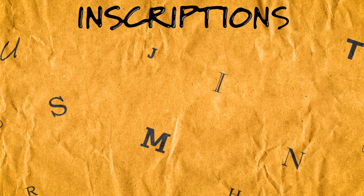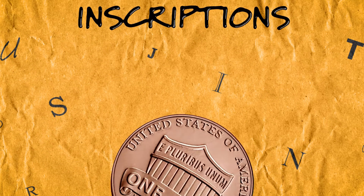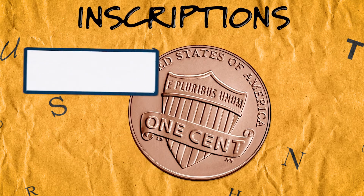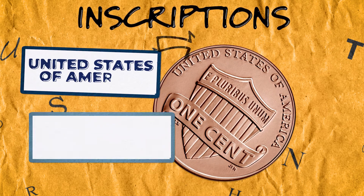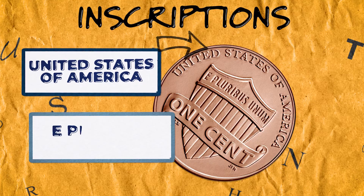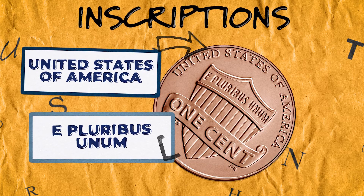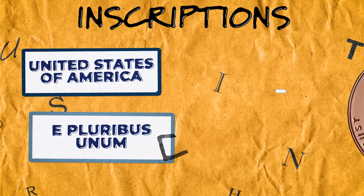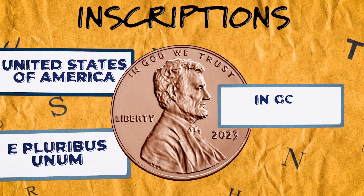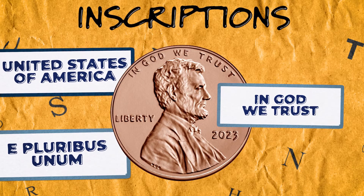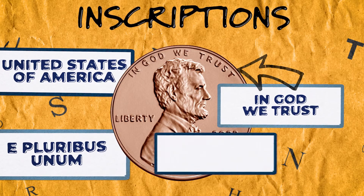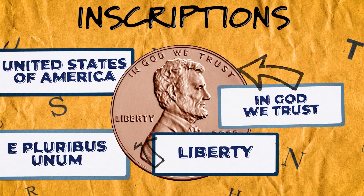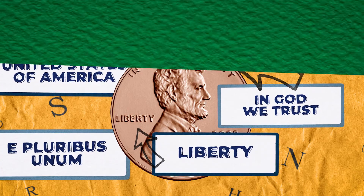Inscriptions are the words and letters used on coins. The mint has to put certain inscriptions on all coins. "United States of America" identifies the country that made the coin. "E Pluribus Unum," which is Latin for "out of many, one," and "In God We Trust" are our country's national mottos. Liberty was an important idea to the founders of our country, and has been on all of our coins throughout history.